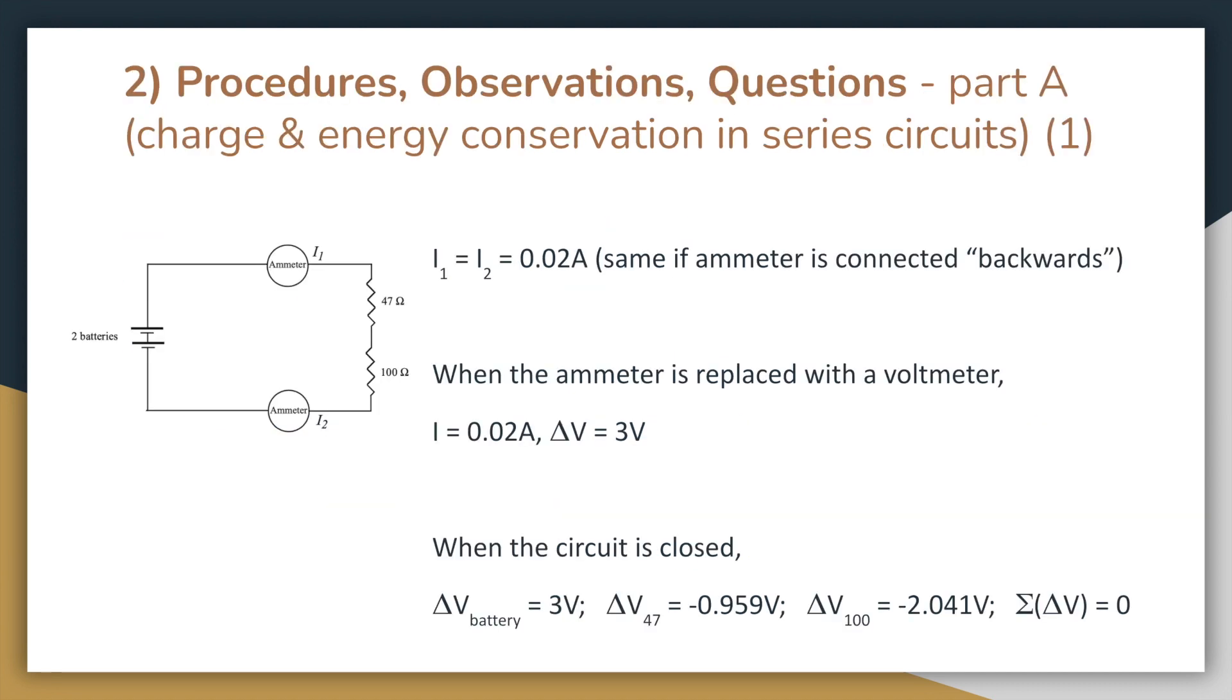So firstly, we have a series circuit with two different resistors, two ammeters, and a battery. I found the ammeter readings to be the same for both the ammeters, and the value stayed positive even if I connected an ammeter backwards. If I replace one of the ammeters with a voltmeter, the current in the other ammeter is the same, and the potential difference is 3 volts. And if I close the circuit and measure potential differences at different points, I find the results shown at the bottom of this slide. I found the sum of potential differences across the circuit to be 0.